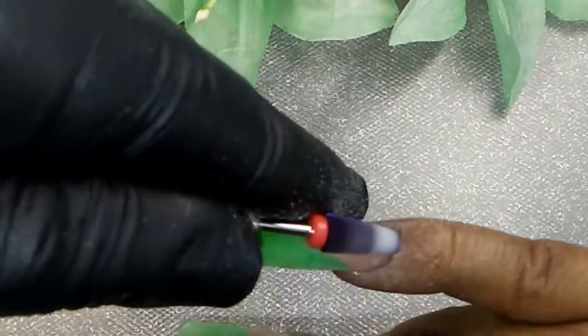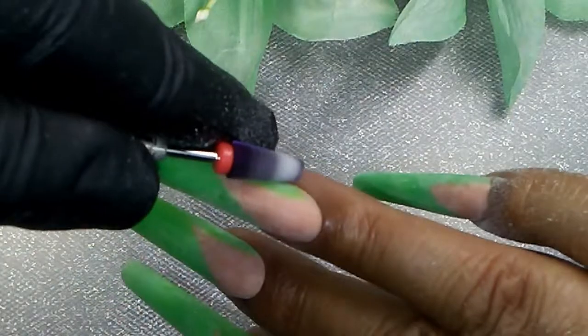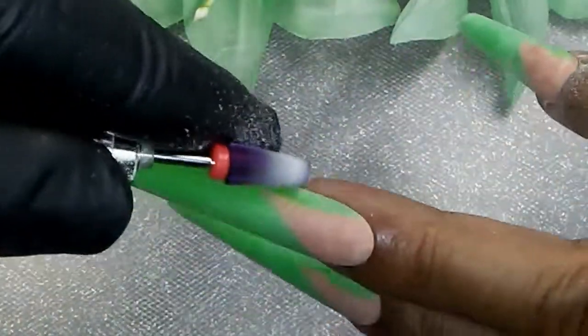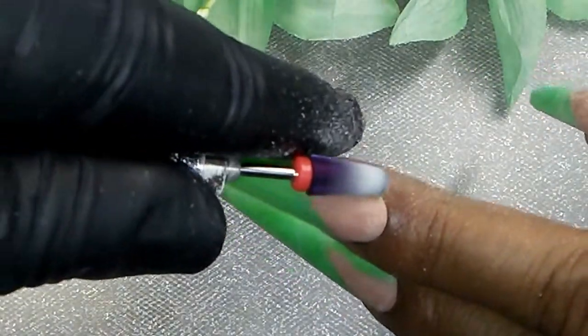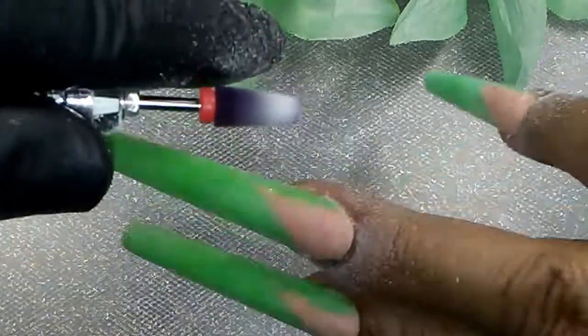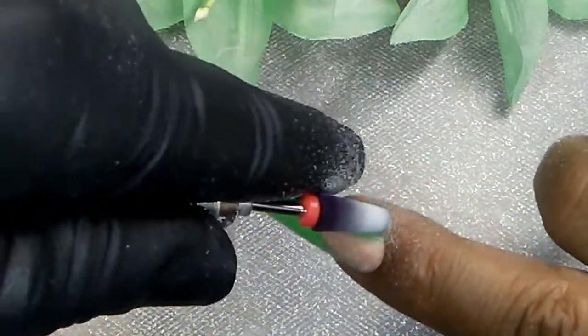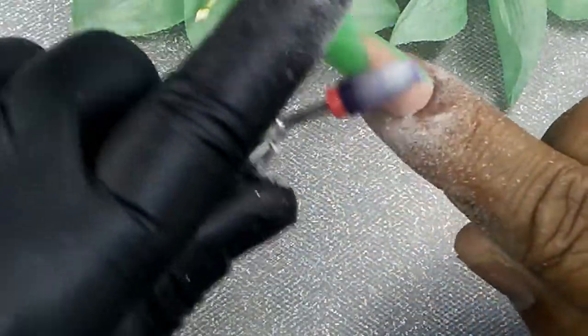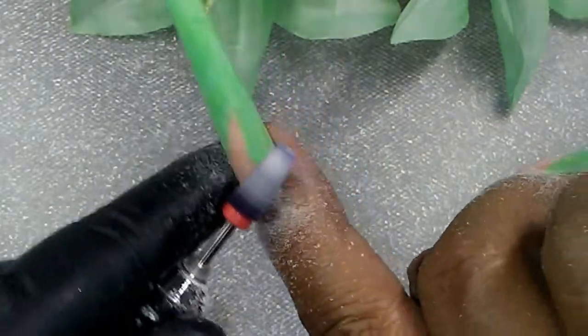So I shaped the cuticle area. I'm using a panel five and one tapered fine drill bit, which is not necessarily a safety bit. Though I do use it on a low speed like six to eight thousand RPM. And that's slow enough to maintain control of the e-file without causing injury like cutting yourself. And I also feel it keeps from overfiling this area.